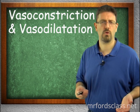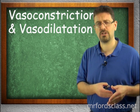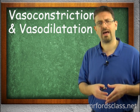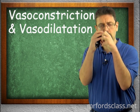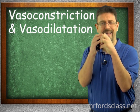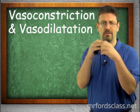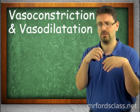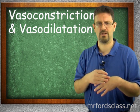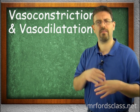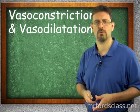Vasodilation is more of a passive process. Vasoconstriction requires the smooth muscles to tighten up, while vasodilation simply needs the smooth muscles to relax — they just chill and open up, producing vasodilation.